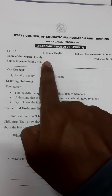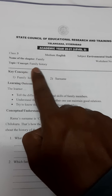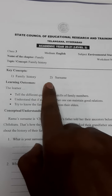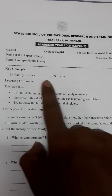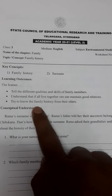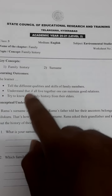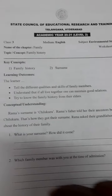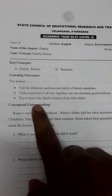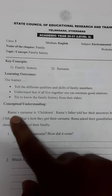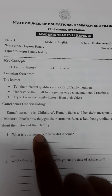Chapter name: Family. Concept: Family History. Key concepts are family history and surname. Learning outcomes are here — what you learn after going through this worksheet, and conceptual understanding.